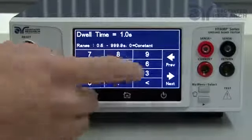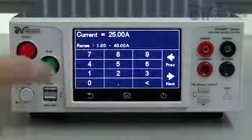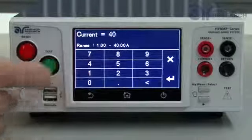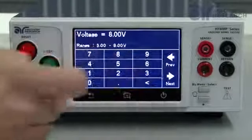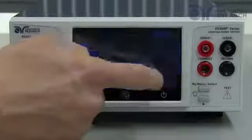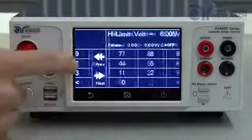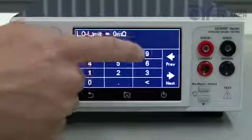To change the test current, input the numeric value on the touch screen and touch the enter key to confirm. To navigate between test parameters, either input the value and press the enter key or swipe left and right to change parameters.